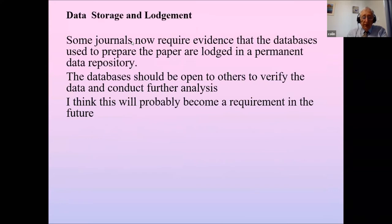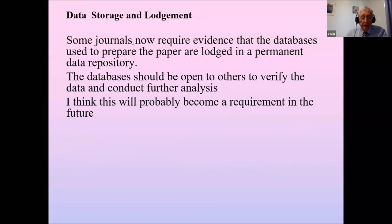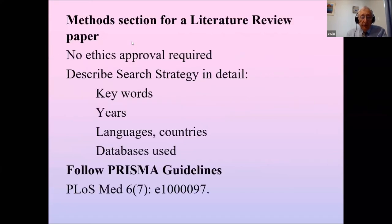You must quote the ethics committee approval number, and it must be obtained before you start collecting data. Some journals now require evidence that all databases are lodged in a permanent data repository so they are open for others to analyze in the future. If you're writing a literature review, you still need a method section but not ethics approval, and you must describe the search strategy in detail — keywords, years, language, database — and follow the PRISMA guidelines.